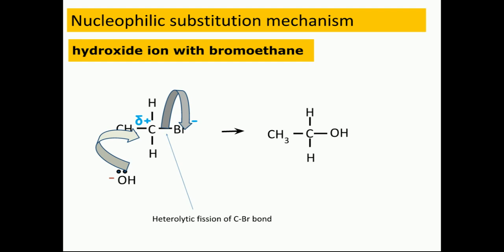So the products, we've got ethanol, and the bromine will come off as a Br- ion. Going back to this bond breakage, the bromine already owned one of the electrons from the bond, but it's actually gained the electron from the carbon, and so it gets a negative charge.